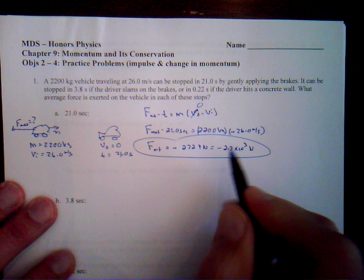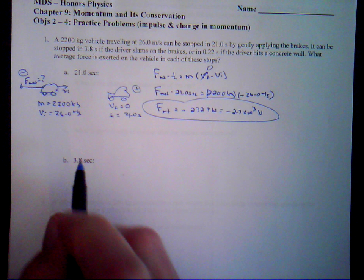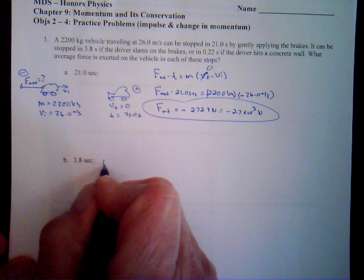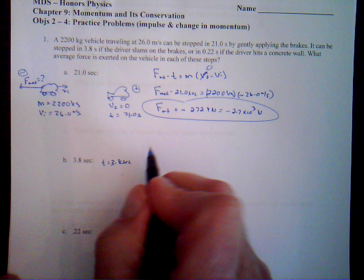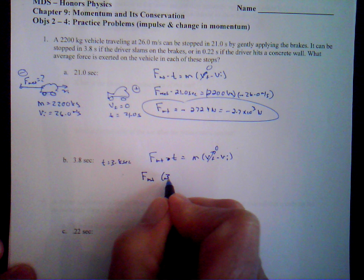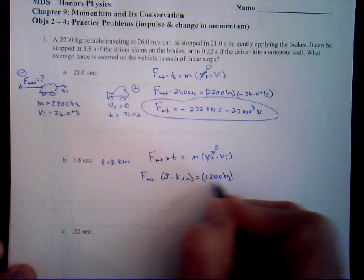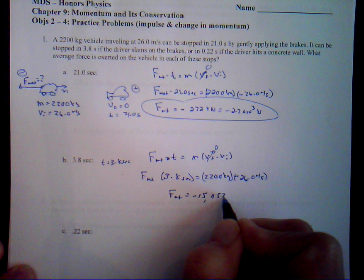What if we stop by putting the brakes on a little harder — it stops in 3.8 seconds? Everything else is exactly the same: mass is the same, initial velocity is the same, final velocity is the same. The only thing changing is the time at 3.8 seconds, and we're still solving for the net force. We use the same equation: net force times time equals mass times v-final minus v-initial. Time is 3.8 seconds, mass 2,200 kilograms, times negative v-initial 26.0 meters per second. We get a net force of negative 15,052 newtons, or negative 1.5 times 10 to the fourth newtons.